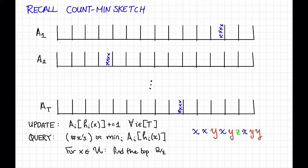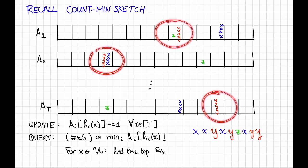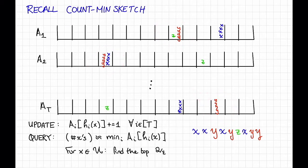We'll have seen four y's, maybe those hashed like here, and a z. And then if I wanted to estimate how many times y appeared, I would look at all the buckets where y landed, and I would take the minimum count over all those buckets, which in this case would be four — the right answer. Then if I want to return all of the heavy hitters, I'm going to loop over all the items in the universe and just find the top ones.